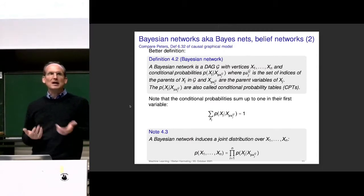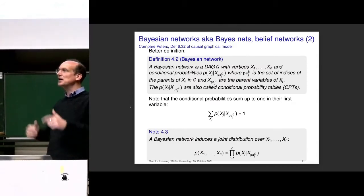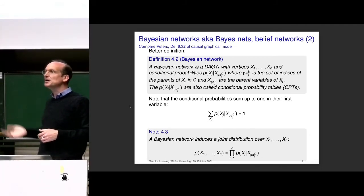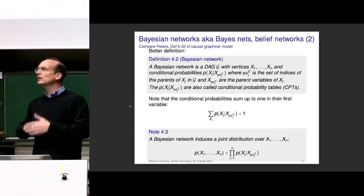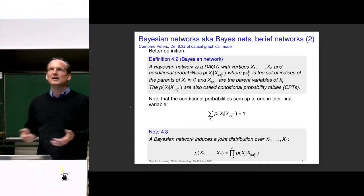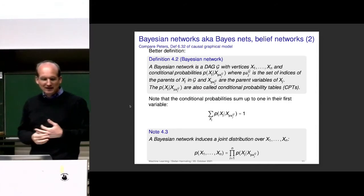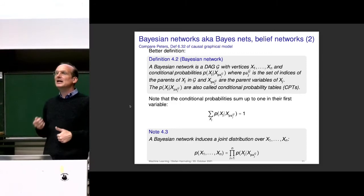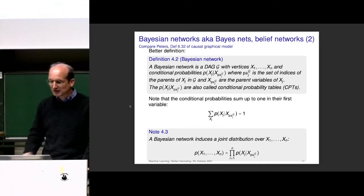A Bayesian network is a directed graph which kind of tells us how the data is generated — it's almost like a causal model. There are actually causal Bayesian networks covered in a lecture called 'causality,' where one uses this kind of structure to model causal things. Here we just use it for a clever representation. Typically the causal directions, if you know them, lead to a very efficient representation with few arrows, so there's some curious connection, but we are not going into that.